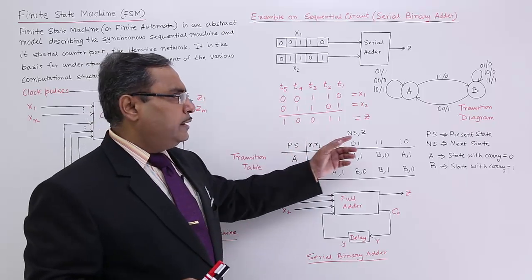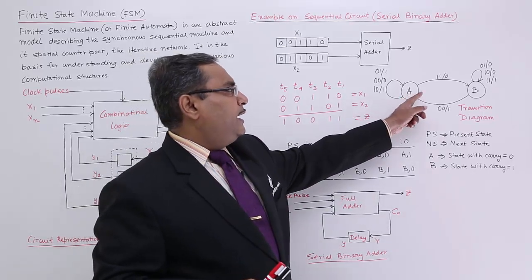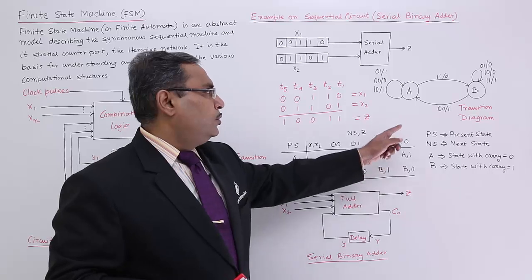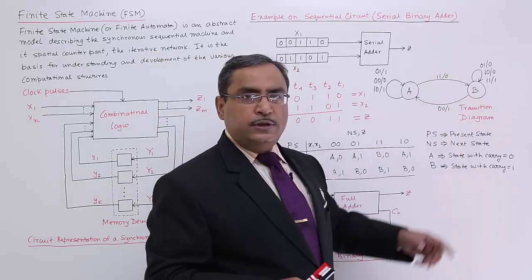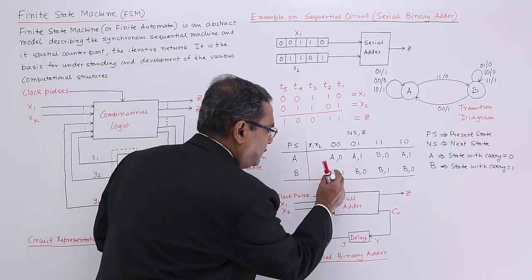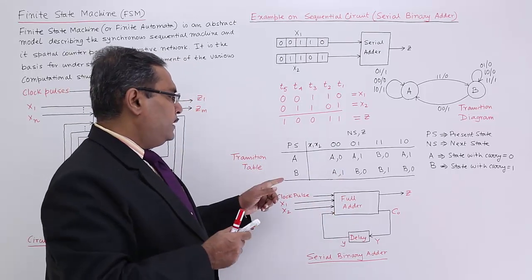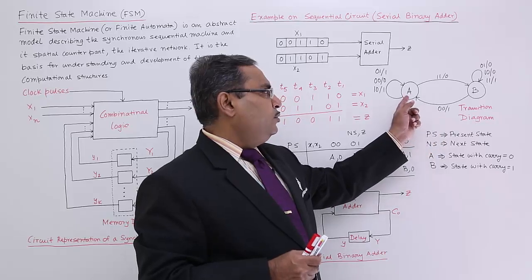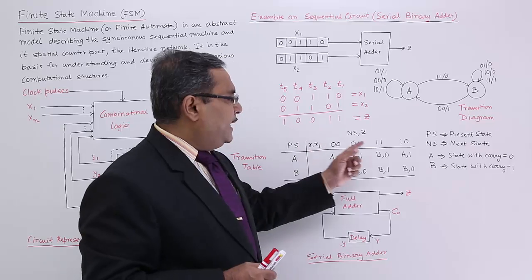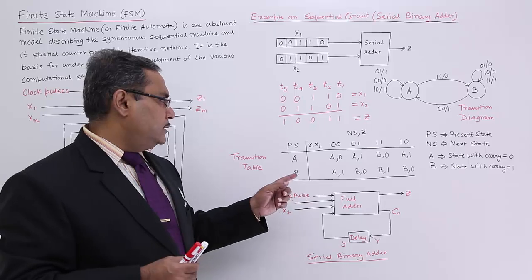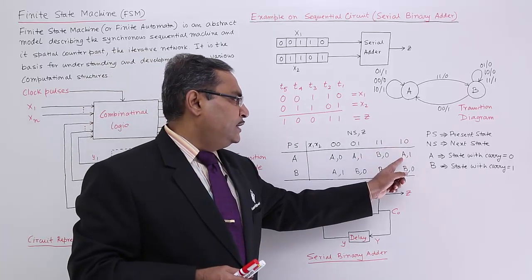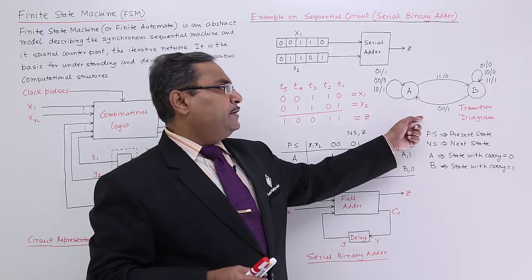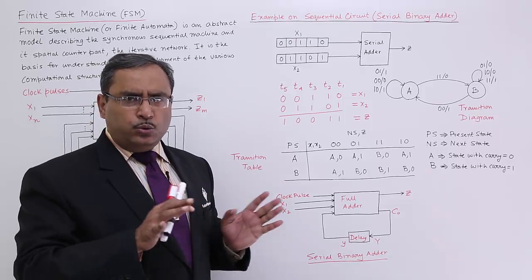The same equivalent transition diagram has been shown. State A and state B are represented as nodes. With input 1,1 from state A, I go to state B with output 0. With input 0,0 from state B, the next state is A and output is 1. With input 1,0 from state A, the next state is A with output 1. This transition diagram and the transition table represent the same thing in two different forms.